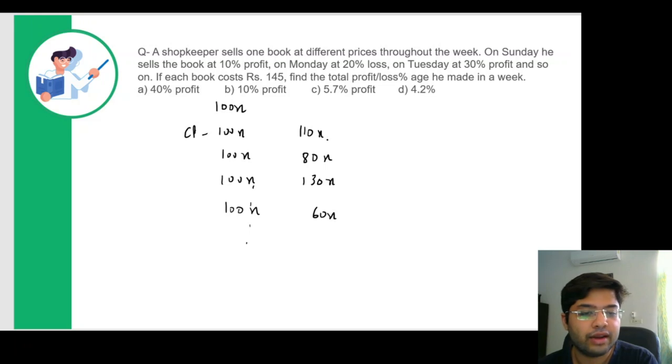So now you can see there's a pattern 110X, 130X, so next would be 150X, 80, 60. So next would be 40X and this would go further and this would come out to be 170X.